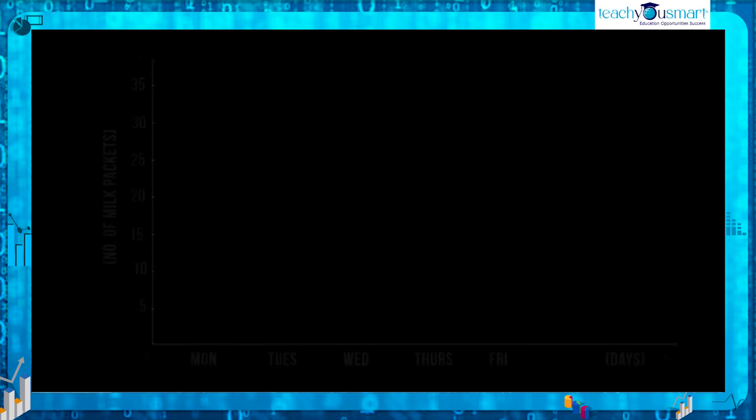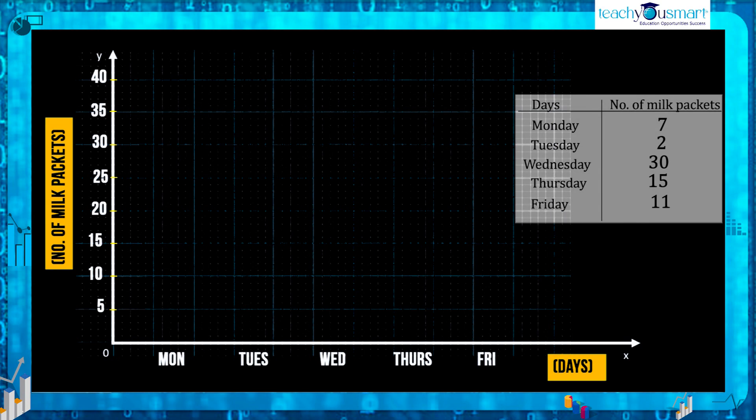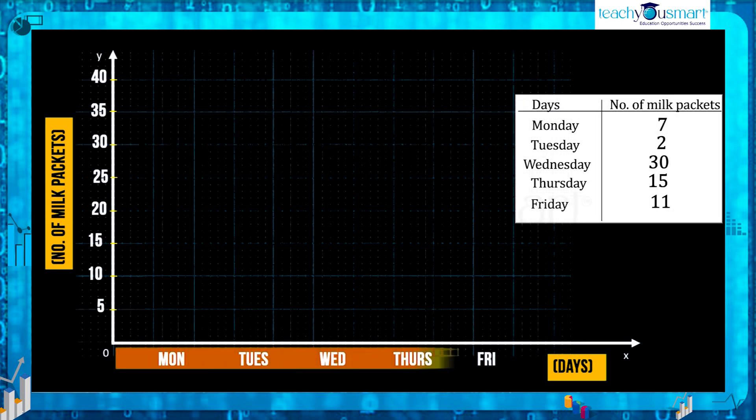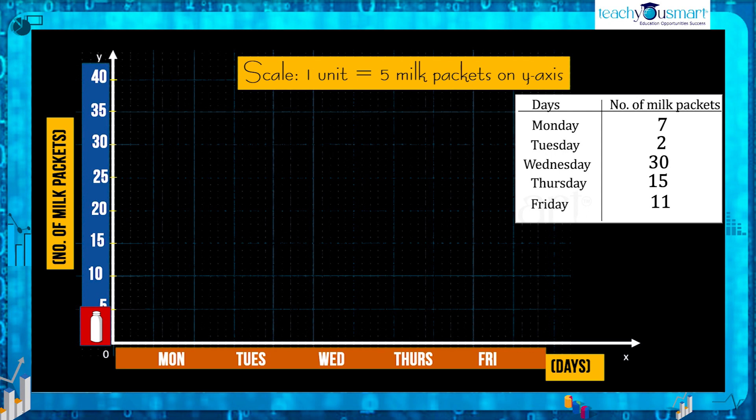The bar graph for the given situation will be shown as follows. In this bar graph days are taken along the x-axis and the number of milk packets along the y-axis. Here the scale is one unit equals five milk packets. This means that one unit of length is for five packets of milk.